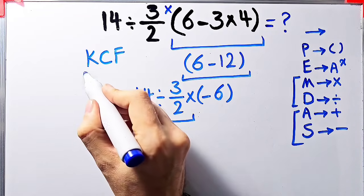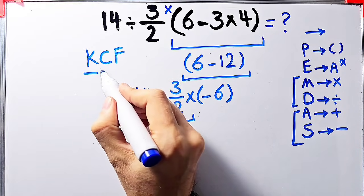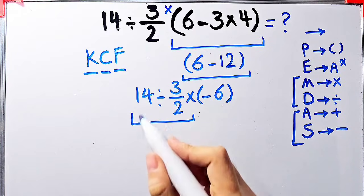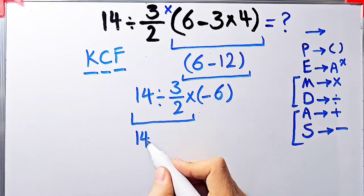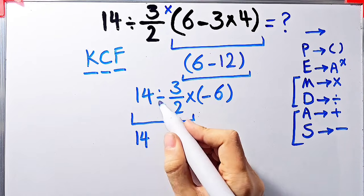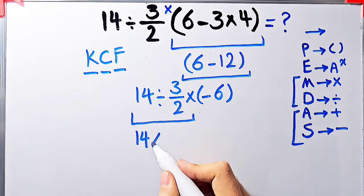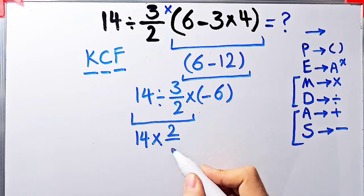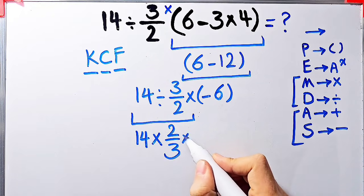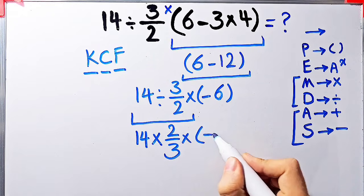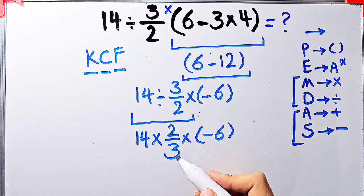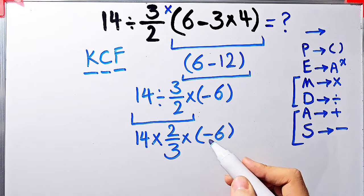In the KCF rule, K stands for keep, C stands for change, and F stands for flip. We keep the first number as it is, after that we change the sign, and after that we flip the second fraction. Now we have a new expression: 14 times 2 over 3, then times negative 6.